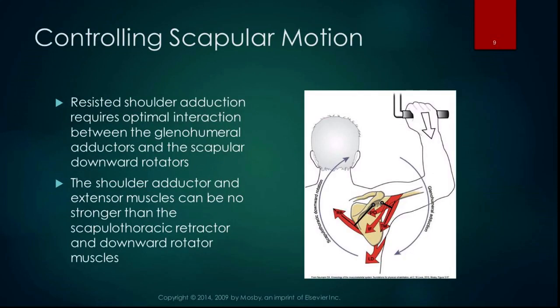The shoulder adductors and downward rotators can work together to help control scapular motion. Resisted shoulder adduction — like a pull-up or a row — requires interaction between the glenohumeral adductors and the scapular downward rotators to stabilize the scapula. Those of you who are personal trainers or Pilates instructors might tell clients to retract their scapulae as they row, which engages the scapular retractors and downward rotators to give a stronger adduction and extension and better control of scapular motion.